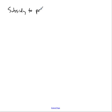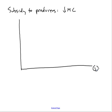The government can make people get more flu shots and capture the positive externality by making it cheaper to give flu shots. What we saw a moment ago was they could make it cheaper to get a flu shot by giving the consumer a voucher. They can also make it cheaper to give a flu shot by subsidizing producers. The effect, from the point of view of output and allocative efficiency, will be essentially the same.